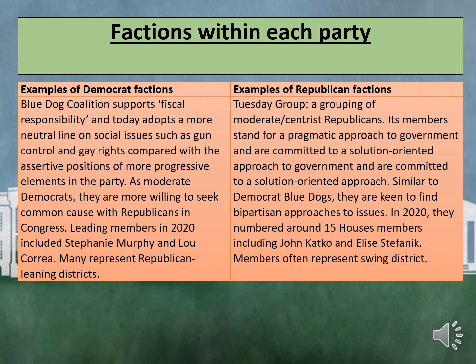The Tuesday Group is an example of a Republican faction — a grouping of moderate or centrist Republicans. Its members stand for a pragmatic, solution-orientated approach to government and are keen to find bipartisan approaches to issues, similar to the Democrat Blue Dogs. In 2020, they numbered around 15 House members, including John Keiko and Elise Stefanik. Members often represent swing districts.